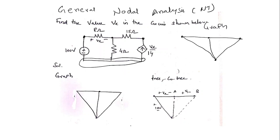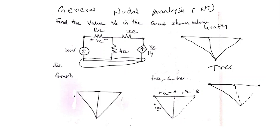From this graph I need to draw a tree. While drawing a tree we need to consider a few rules: all voltage sources should be kept in the tree and all current sources should be kept in the co-tree. I need to draw all the nodes from the graph in the tree as well. The 100-volt source is drawn in the tree along with two other branches, making sure there is no closed path — this is the tree. The branches available in the graph but not in the tree form the co-tree, which I will draw using dotted lines.